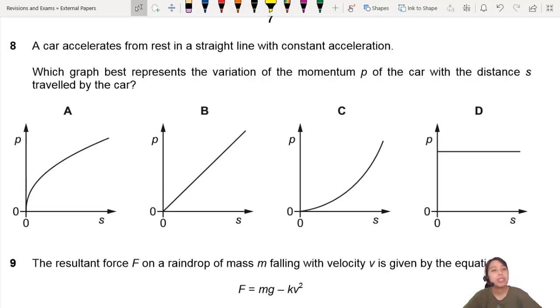A graph question from chapter 3. A car accelerates from rest in a straight line with constant acceleration. This is from rest, probably a good key. Start off with zero velocity and constant acceleration too. Which graph best represents the variation of momentum P of the car with distance S?